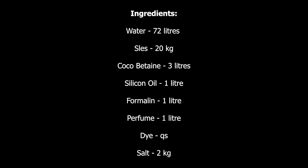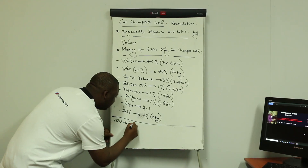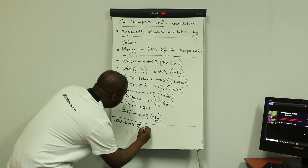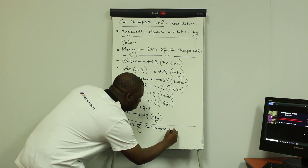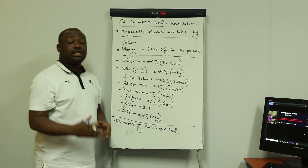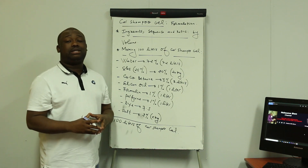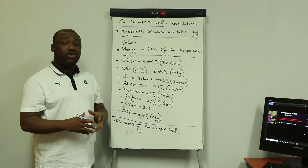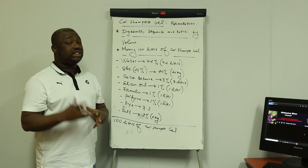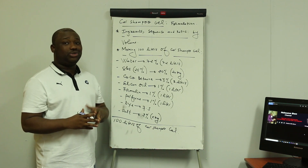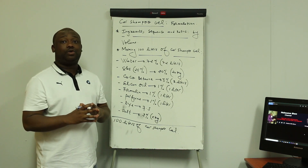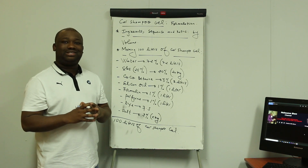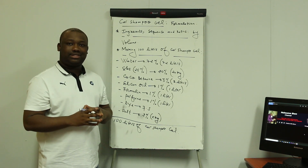By doing this you actually obtain 100 liters of your car shampoo gel. That's it! Thank you guys for watching. Make sure you subscribe to the channel — there is a lot to learn here. Make sure that you like our videos, share them, and also suggest the channel to people you know. Thank you guys for watching — see you on the next video.